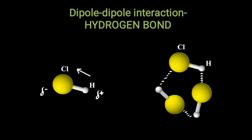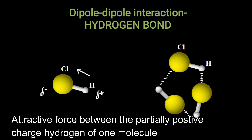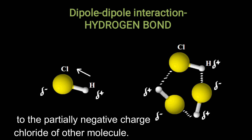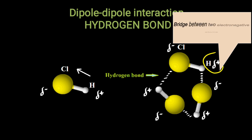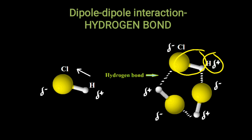When these polar molecules stay together, there will be an attractive force between the partially positive charged hydrogen of one molecule and the partially negative charged chloride of another molecule. This interaction is known as hydrogen bond. We can define hydrogen bond as a special kind of dipole-dipole interaction where hydrogen acts as a bridge between two electronegative atoms — one atom is bonded with the hydrogen by a covalent bond, and the other by electrostatic interaction.